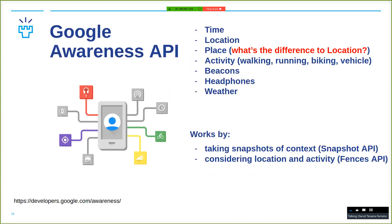The guys at Google have wrapped this up into what's called the Google Awareness API. It combines a subset of all the sensors you could think of, by answering very particular questions. For example, you can ask about the time of day, location, place, activity — walking, running, biking — proximity to beacons, the state of the headphones — is it plugged in or unplugged? — and even the weather.